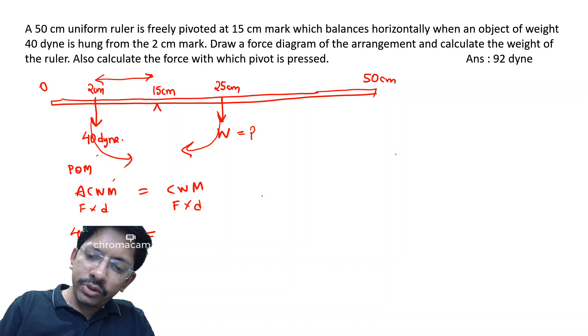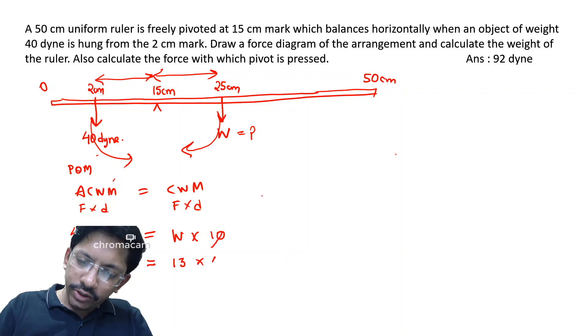So the answer will be 13 into 4 is equal to 52, and the unit will be dyne. Also calculate the force with which pivot is pressed.